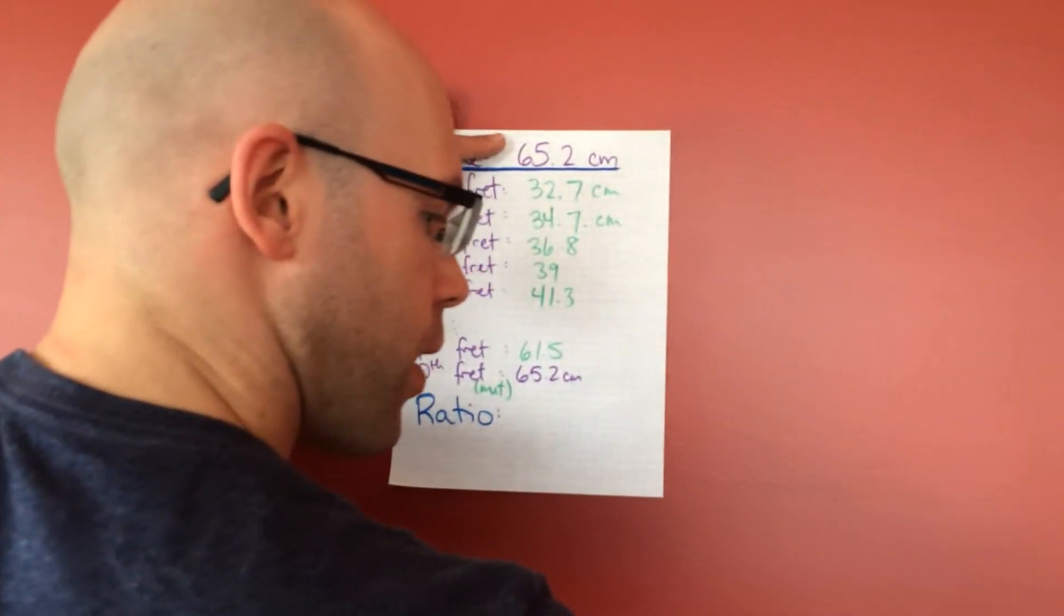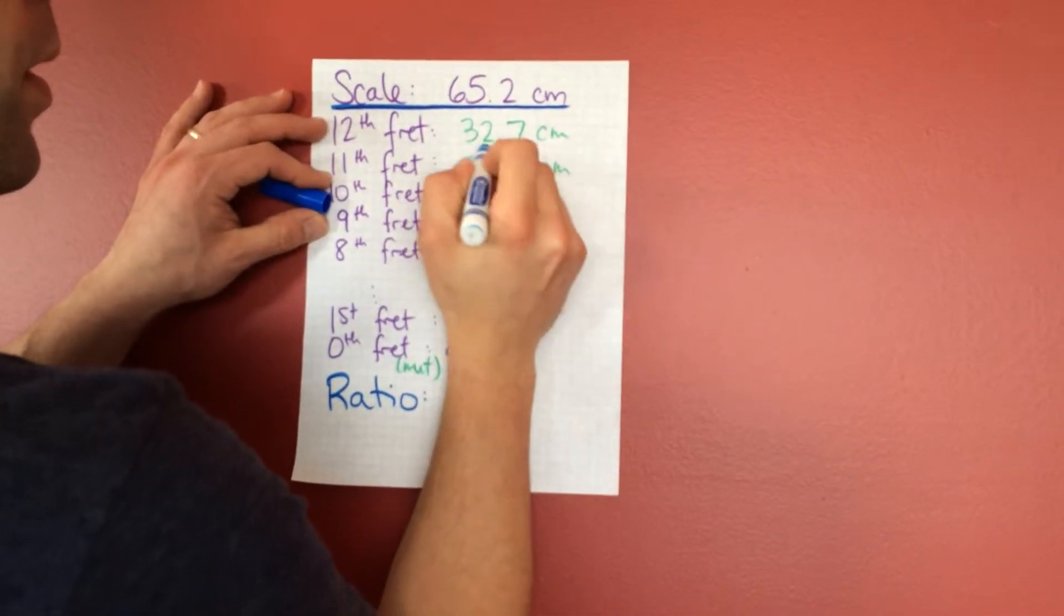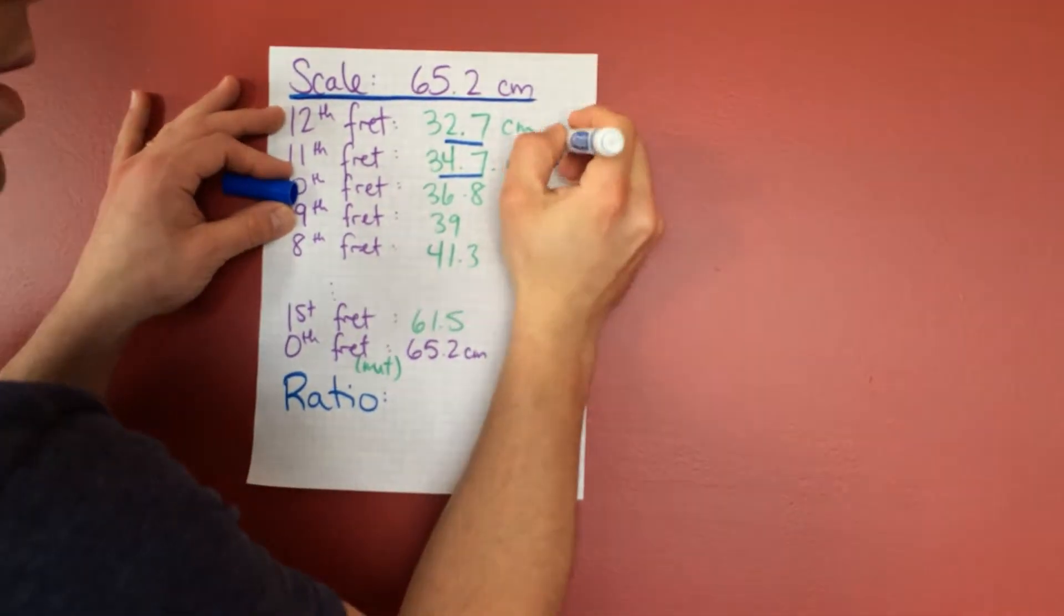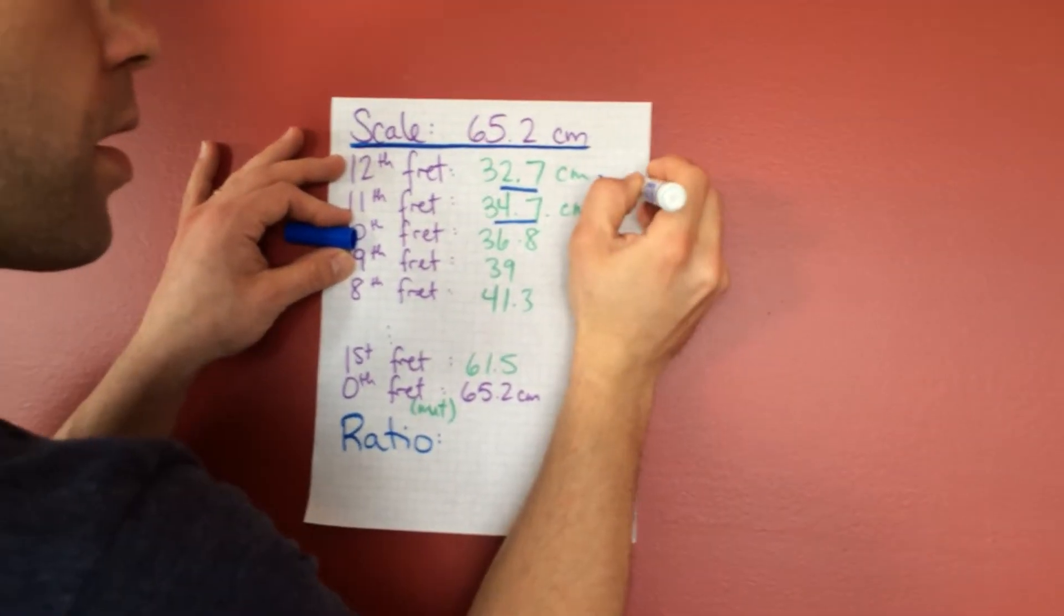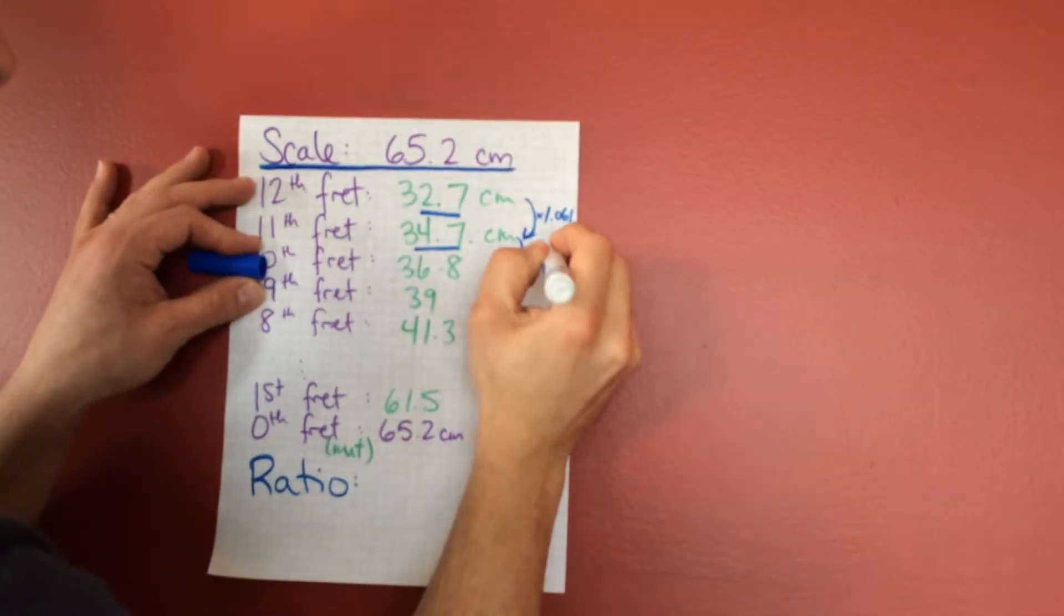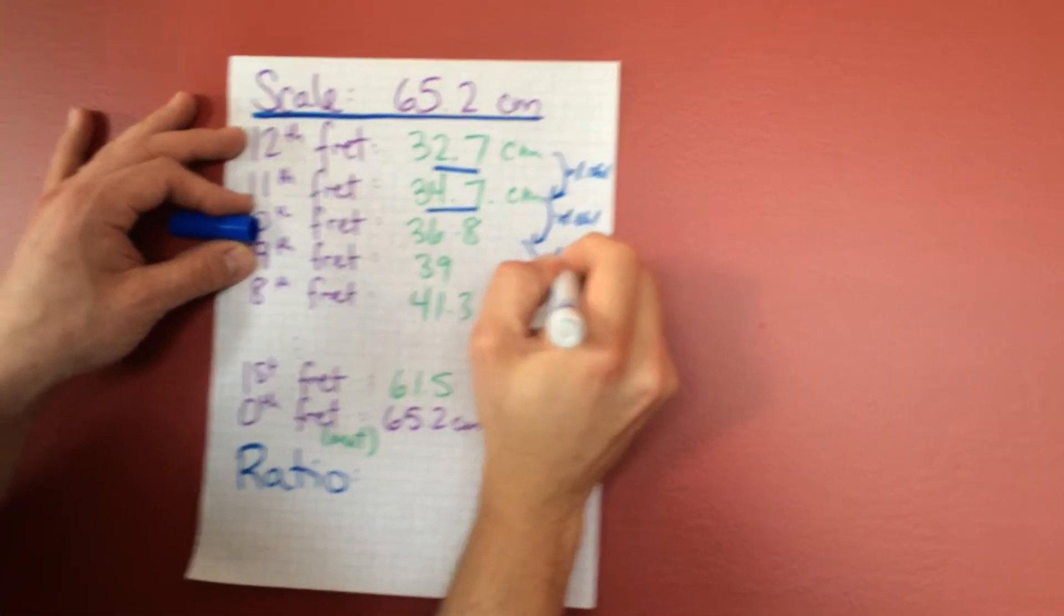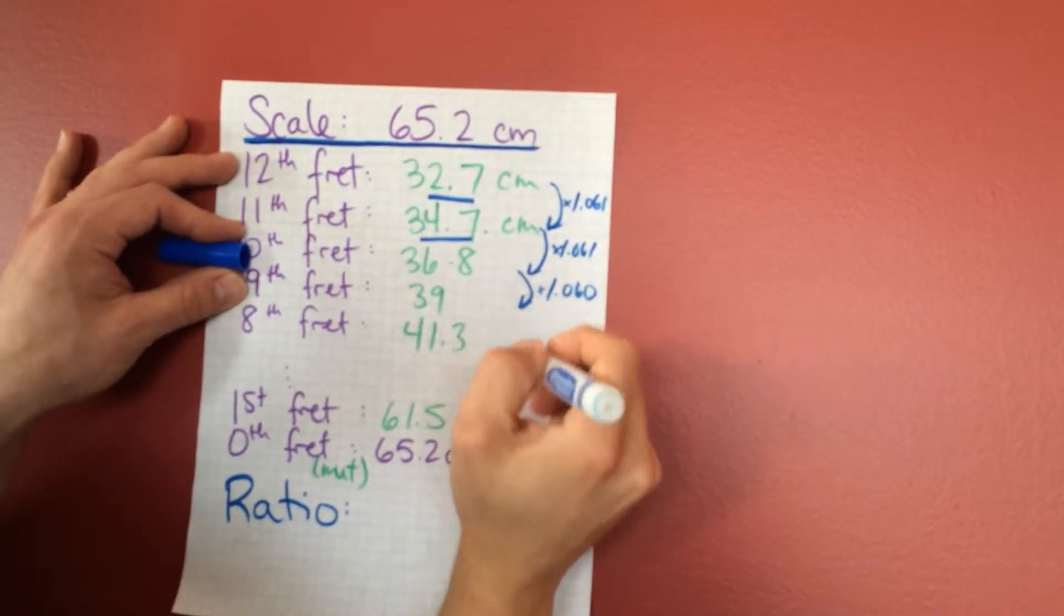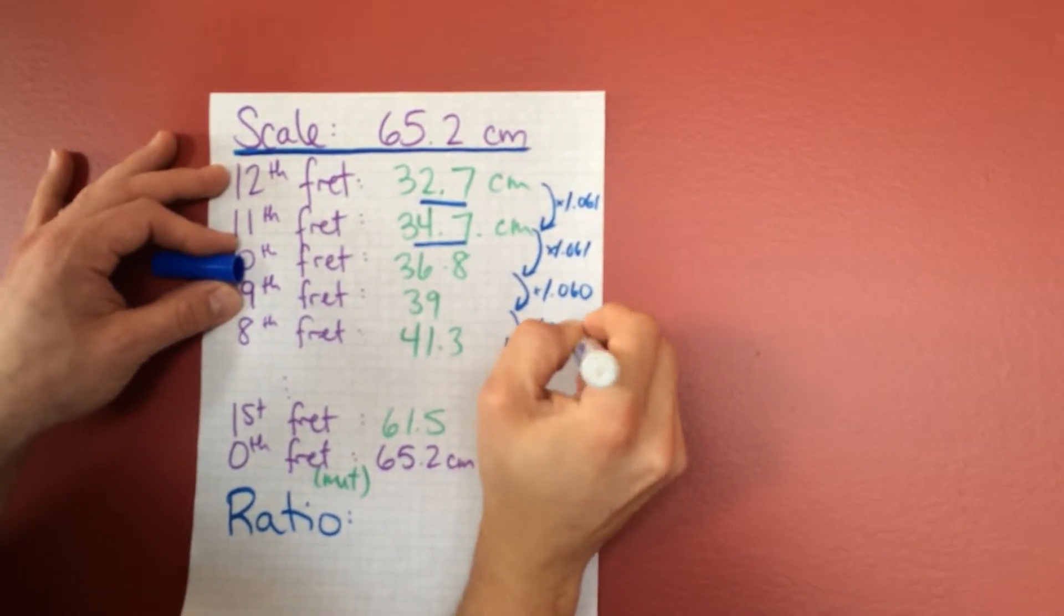So the interesting part here now is if you take the ratio by dividing this number by this number here, the ratio is, I have to multiply by 1, but 1.061 will get me that number. And if I multiply this by 1.061, I get that number. And if I continue, 1.06, this one works out to 1.060. And this one works out to 1.059.